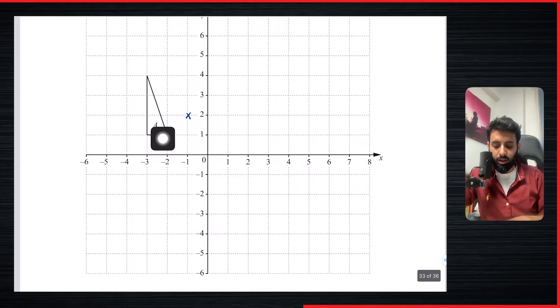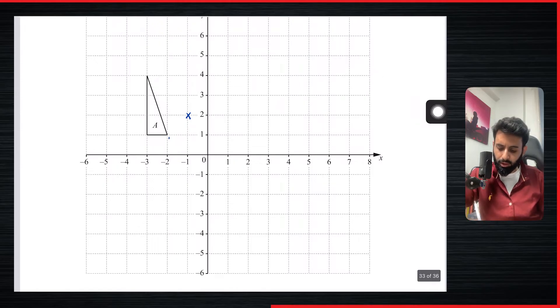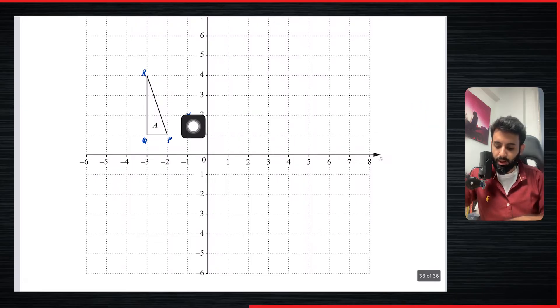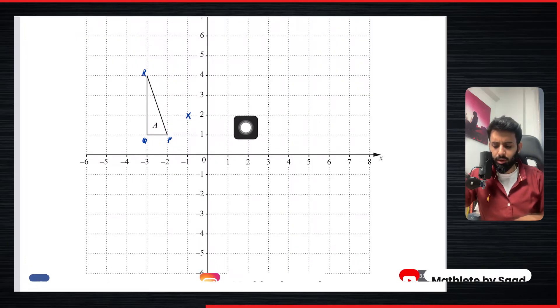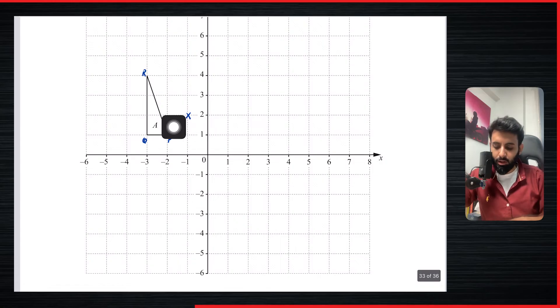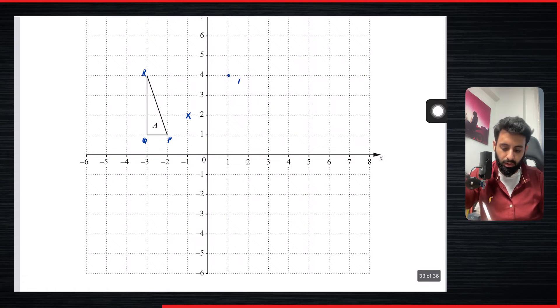Now, again, remember that the image is going to be double the size of the object, and it's going to be on the opposite side. So here also, let's label them, let's call them PQR. So let's start from P, which is one right and one down. Let's do that again. One right, one left, and one down. Yeah, so now it's going to be 1, 2, two to the right, and two units up. There you go. Here is P prime.